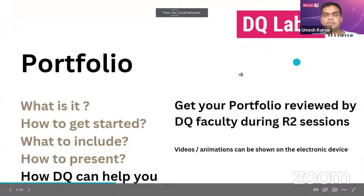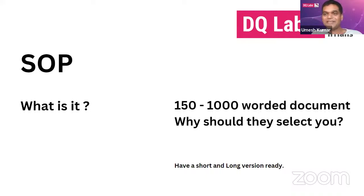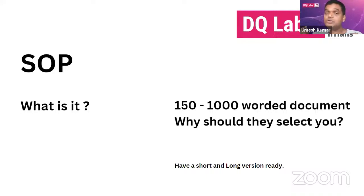Now let's move to the statement of purpose. SOP in a college admission context stands for 'statement of purpose,' not standard operating procedure. It is a 1,500 to 2,000 word document — basically a written document explaining why the school should select you. The school receives thousands of applications, so this is about what makes you different and why they should look at you.